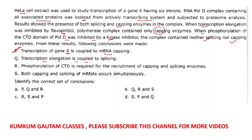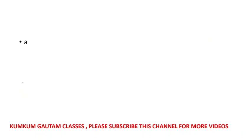Transcription of gene X is coupled to mRNA capping — when transcription is happening properly, capping occurs; when inhibited, capping still happens, confirming this. Transcription elongation is coupled to splicing because when elongation is stopped, splicing does not occur. Phosphorylation of the CTD — the carboxy-terminal domain — is important for capping enzyme recruitment and splicing. Both capping and splicing do not occur simultaneously, so that statement is completely wrong. The correct answers are P, Q, and R.